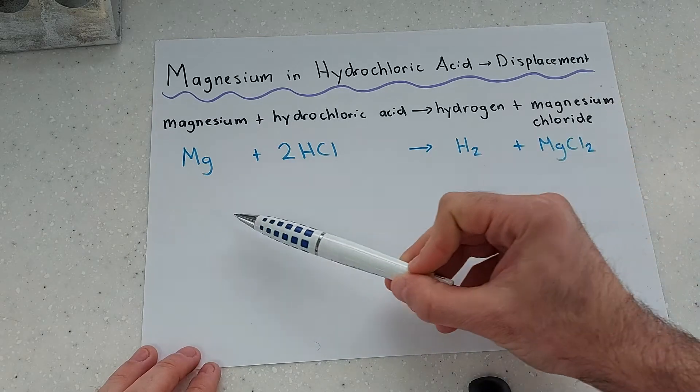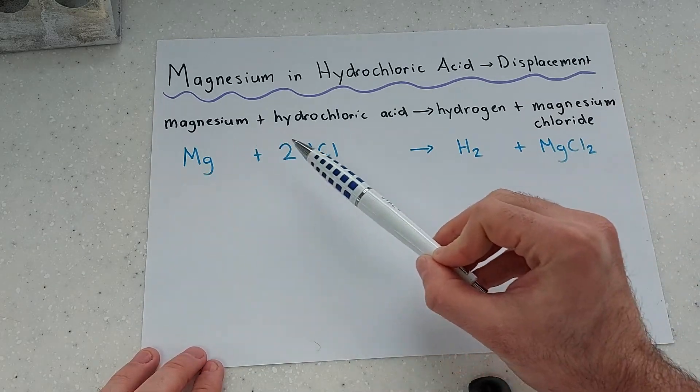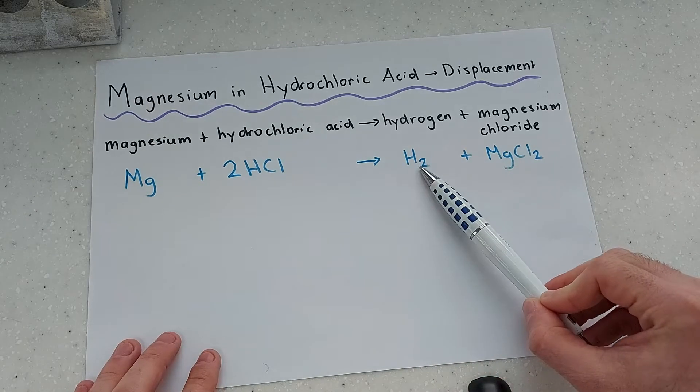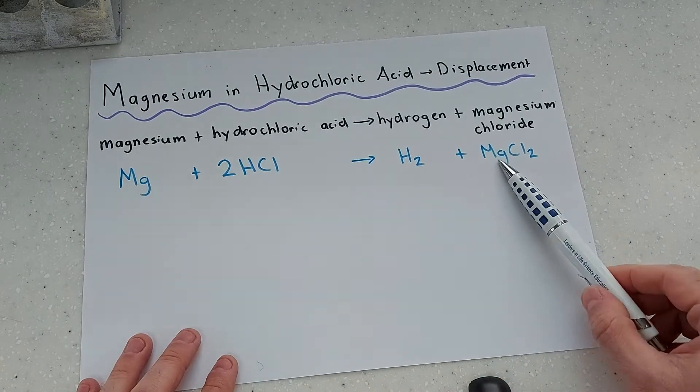Our chemical equation: magnesium plus hydrochloric acid which will give me hydrogen gas and magnesium chloride.